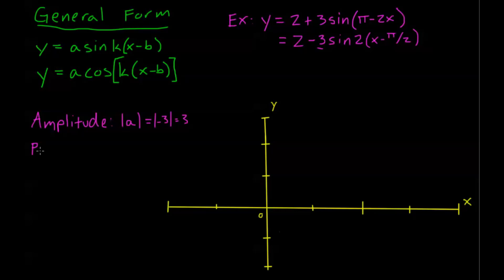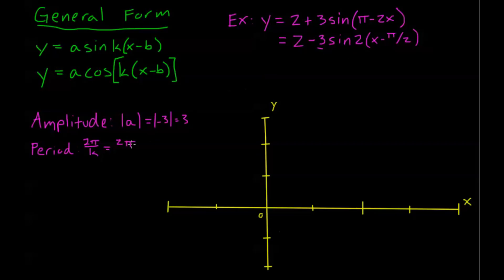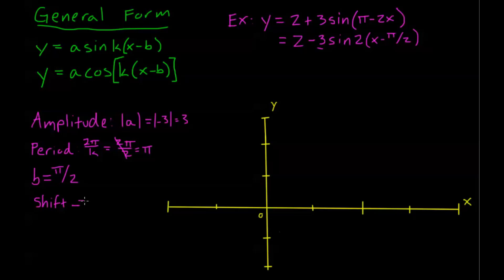Next, we want to find the period. The period of sine or cosine is 2 pi divided by k. Here my k is a positive 2, so that's going to be 2 pi divided by 2, or in other words, pi. I have a period of pi here. For my shifts, in my general form I have x minus b. So I have a shift of positive pi over 2 — my b equals positive pi over 2. That negative sign in front of pi over 2 is part of the formula; my actual b is just positive pi over 2. So I have a shift to the right of pi over 2.